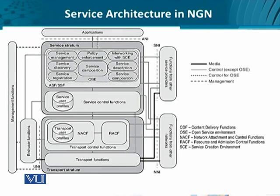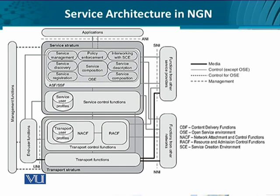Looking at the overall service architecture in NGNs from the open service environment perspective, we have the transport stratum and below we have the service stratum. Within the service stratum, we have the open service environment that contains some functional entities. These functional entities may all be used at once, or only some of them may be used. We also have the application support functions and service support functions as the outer block, meaning the open service environment is a sub-part of the ASF and SSF within the service stratum.